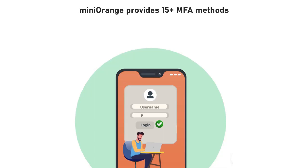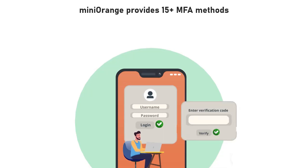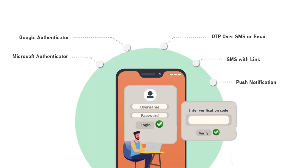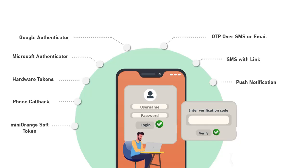Mini Orange provides 15 plus MFA methods like OTP over SMS or email, SMS with link, push notifications, Google Authenticator, Microsoft Authenticator, hardware tokens, phone callback, Mini Orange soft token, and many more.